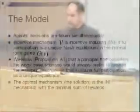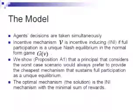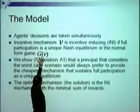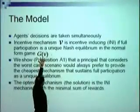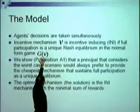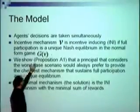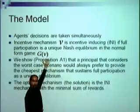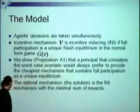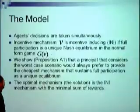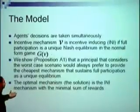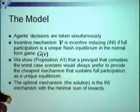So the optimal mechanism, or solution, is the incentive mechanism V that makes the game G(V) have only one equilibrium in which all participate — an incentive-inducing mechanism — and which also minimizes the sum of rewards in terms of the principal's expenses.